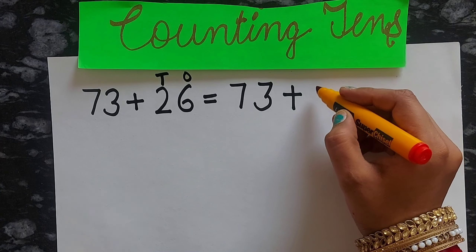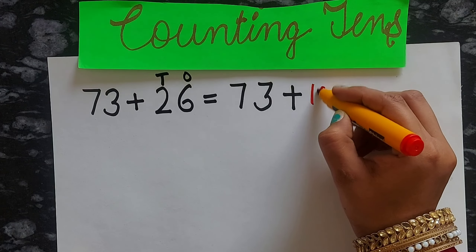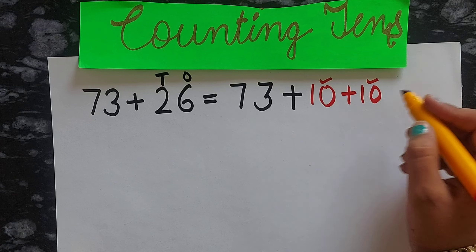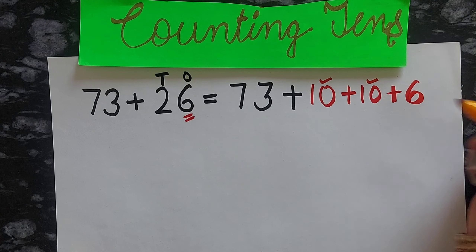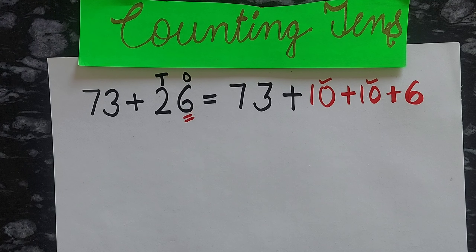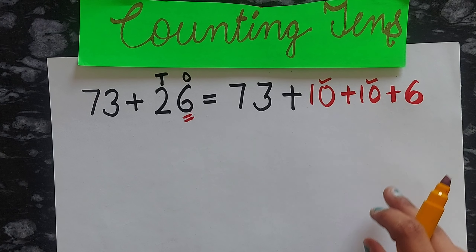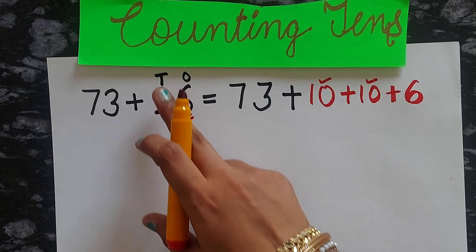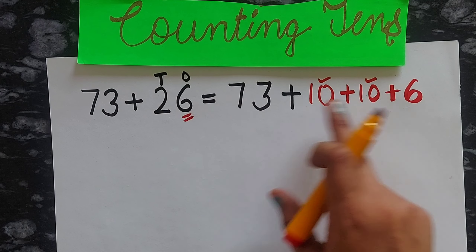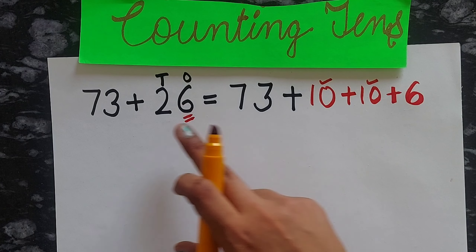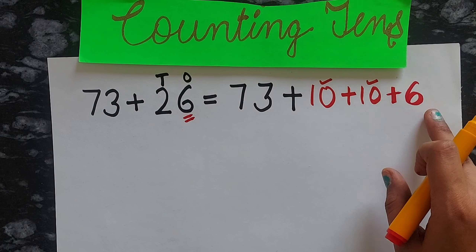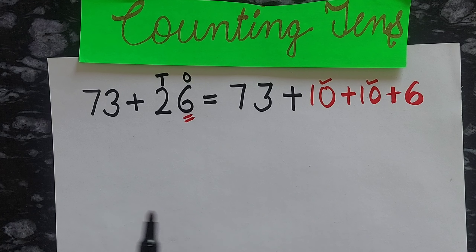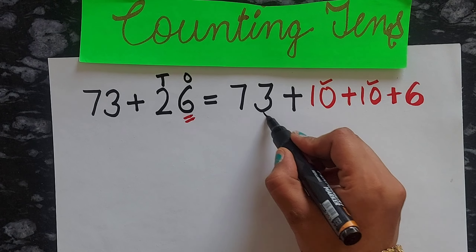We write down two tens: 10 plus 10. You know the expanded form, so we use the expanded form method here. You just divide into tens — if there are 2 tens, write 2 times 10. What is left over is 6, so we write 6 as well. Now we will add these numbers one at a time.